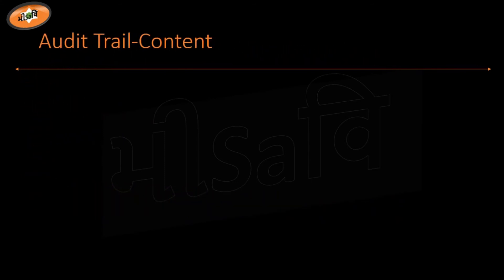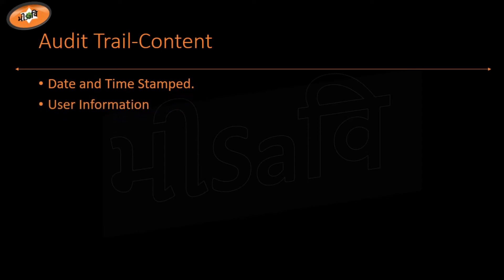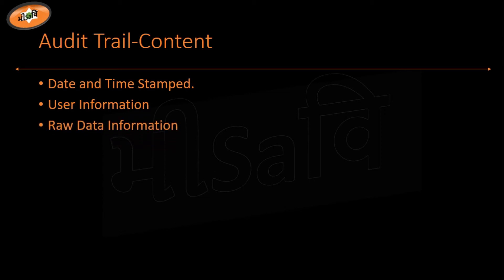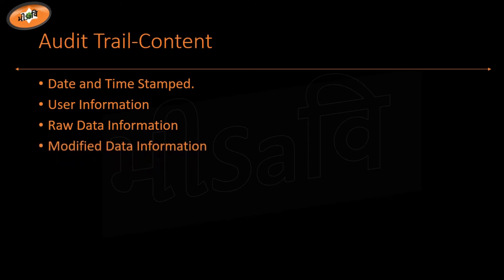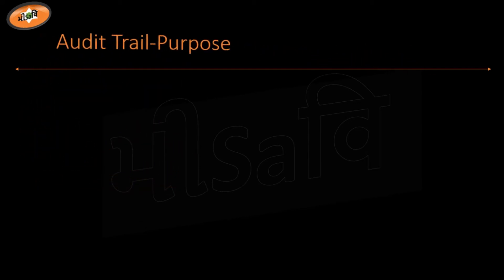Now, what is the content of audit trail? The first and foremost is date and time stamp, then user information, then raw data information — when I have analyzed this case — then modified data information, and if there is any change, then justification for that change.